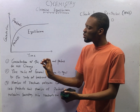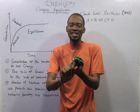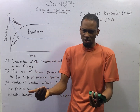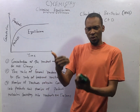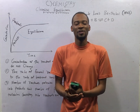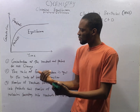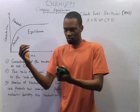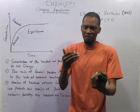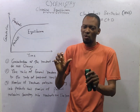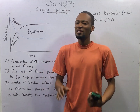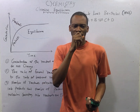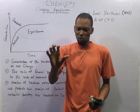Before now, we have been able to look at spontaneity of chemical reactions and factors that affect the rate of chemical reactions. In the previous episode, we looked at the rate of chemical reactions and the factors that affect the rate of chemical reactions. Today, we shall be looking at chemical equilibrium.